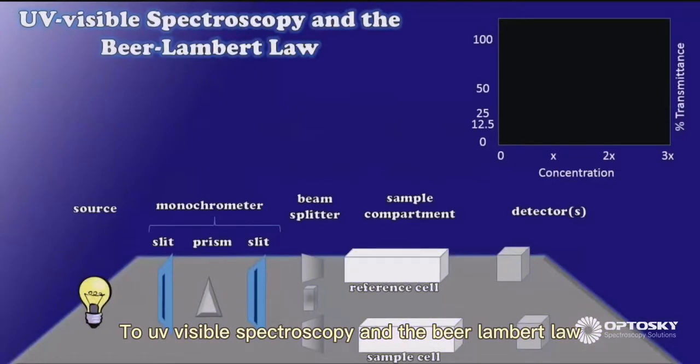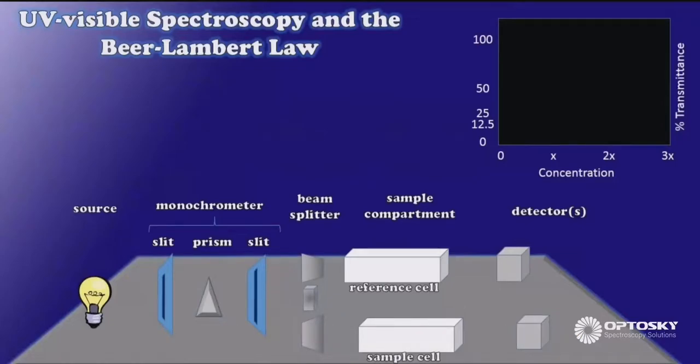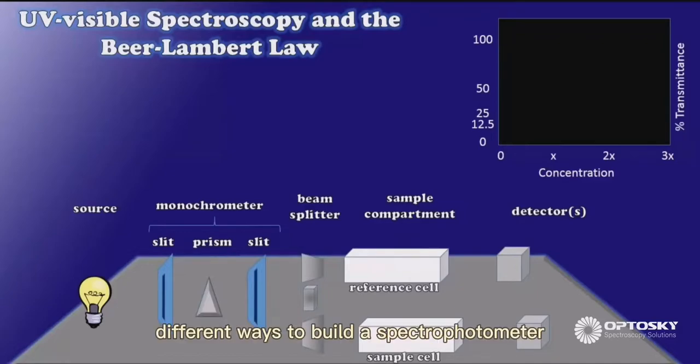To UV-visible spectroscopy and the Beer-Lambert Law. To begin our discussion, I've drawn a schematic on the bottom half of this screen depicting a fairly typical setup for a UV-visible spectrophotometer. Now there are many different ways to build a spectrophotometer, but this is one of the simpler designs, so I thought we'd start there.